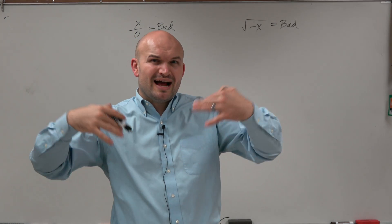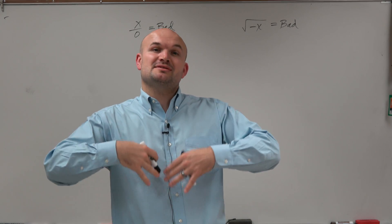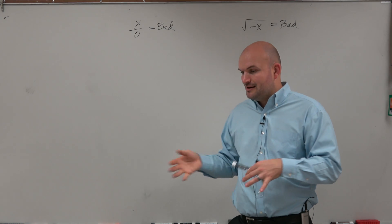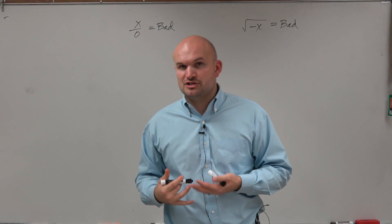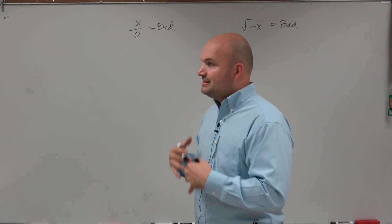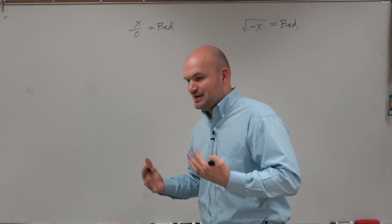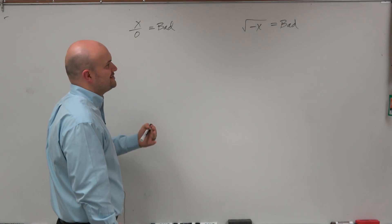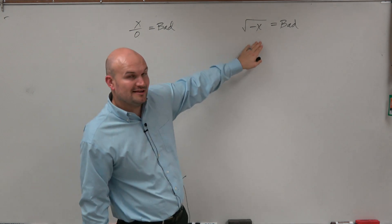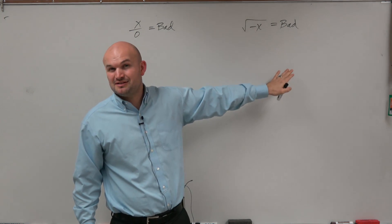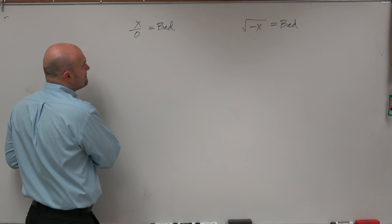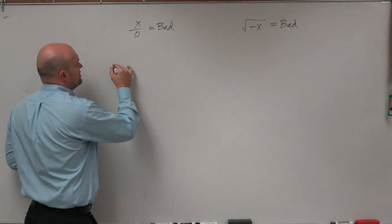When we're identifying the domain, we want to find the good numbers — the numbers that can be evaluated into the function, that are a part of the domain. It really depends on what the function is as far as what values make it good and make it bad. Understanding that dividing by 0 and taking the square root of negative numbers are bad is easier to remember. So let's take a look at some very basic functions.